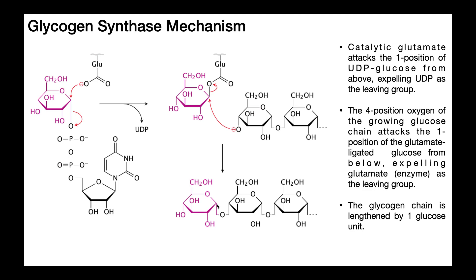For that, we look at the first position of the glucose, which is this anomeric carbon. Recall that the anomeric carbon can have this oxygen either going up, which it's not here, or down, which it is.